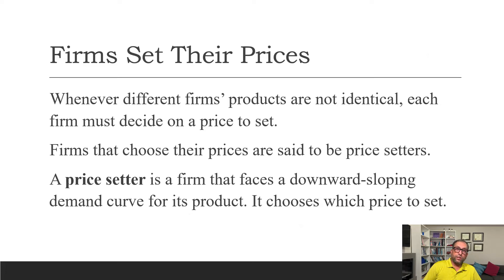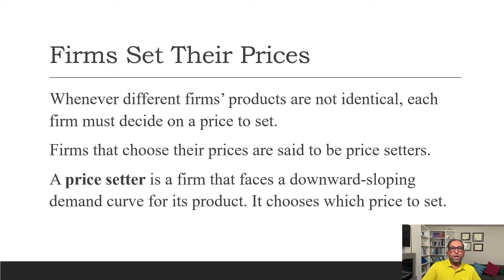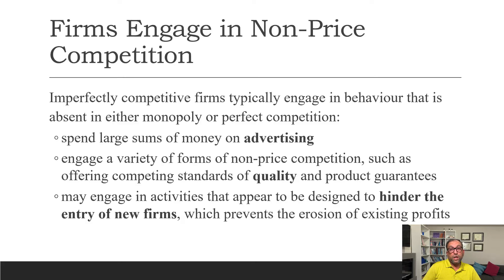In a monopolistically competitive market, firms are price setters. A price setter is a firm that faces a downward-sloping demand curve, very similar to a monopoly. The firm decides: if we produce this much quantity, we can charge this much price — just like a monopoly. So it chooses the price at which to sell.